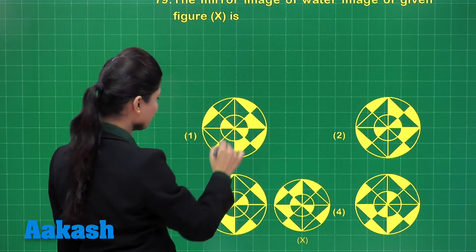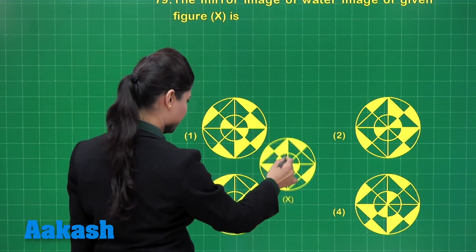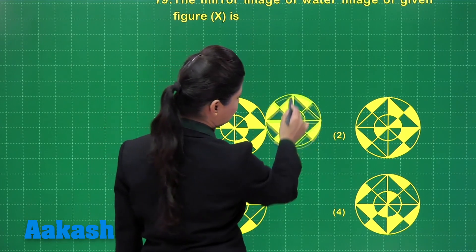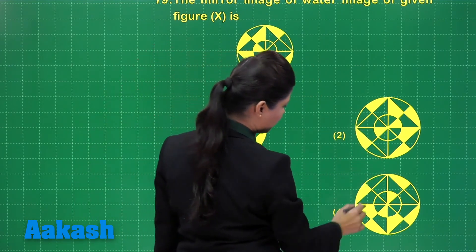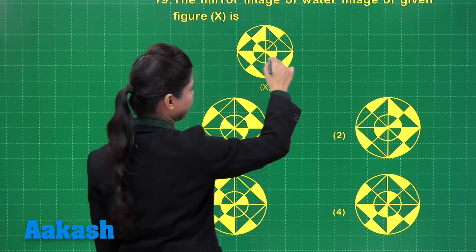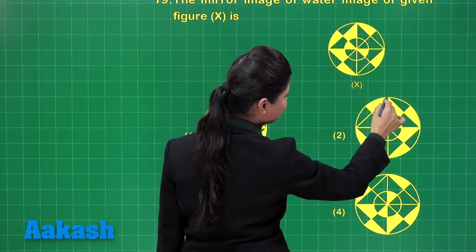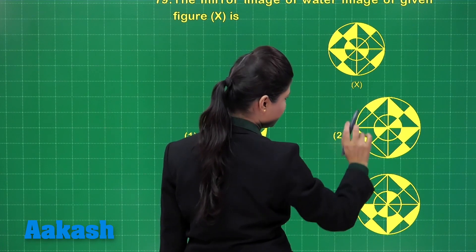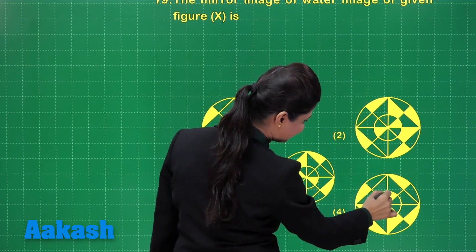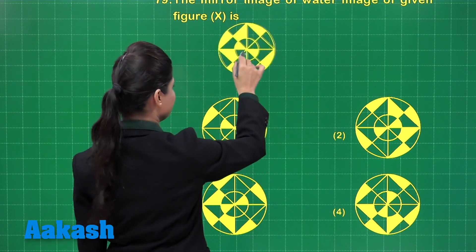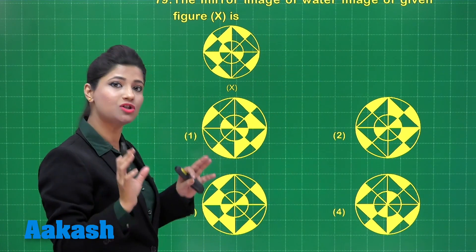Comparing option number 1 and option number 3, the triangular portion is coming on the top in both. I cannot consider option number 2 and option number 4 — I am completely neglecting them because in those options the two portions that should be unfilled are instead filled, and the sector is also filled. So those are eliminated. Now coming to these two remaining images — that was about the water image.